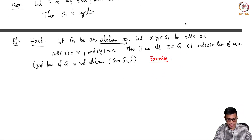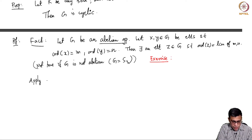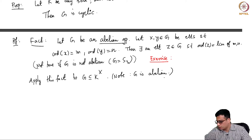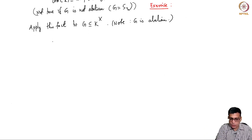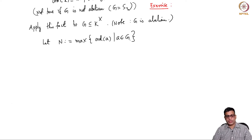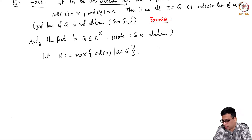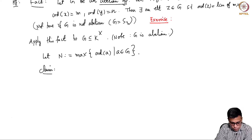Let us use this theorem. Coming back to the proof of our proposition, apply this fact — it is a fairly easy fact to prove, just straightforward. Apply this fact to G; note that G is abelian because multiplication in a field is abelian. Now let N be the maximum order among all elements of G. Remember G is a finite group by hypothesis, so you list all the elements, look at their orders, and take the maximum. The claim is that G is in fact of order N, and we will prove this by showing that the order of every element a divides N.